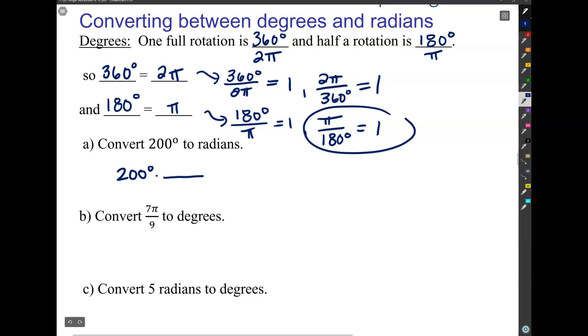I'm going to multiply by one in a way that has degrees in the bottom to cancel out. So I will use this one right here. So I'm going to say π over 180.